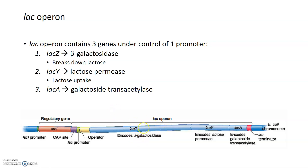Lac Z encodes beta-galactosidase, which breaks down lactose into its component sugars, glucose and galactose. Lac Y encodes a lactose permease, which is a channel that allows lactose uptake into the cell. And lac A encodes this transacetylase, for which the function is still a little bit unknown.